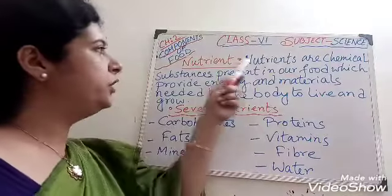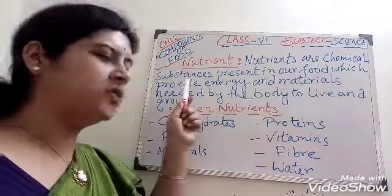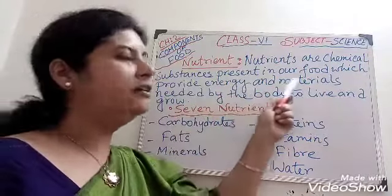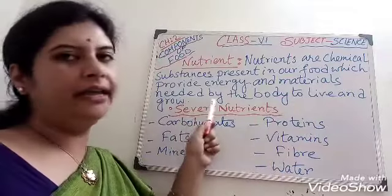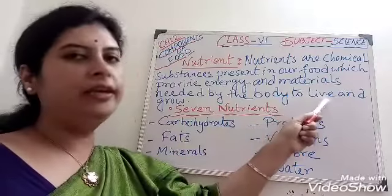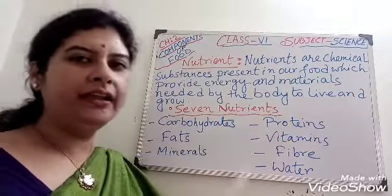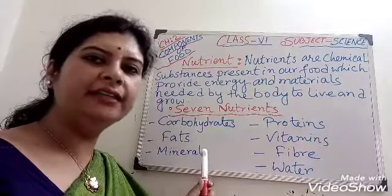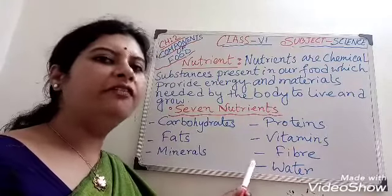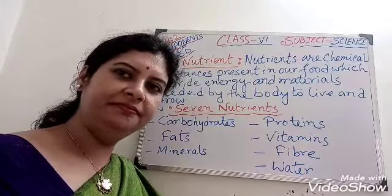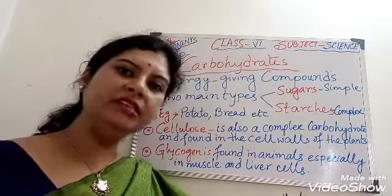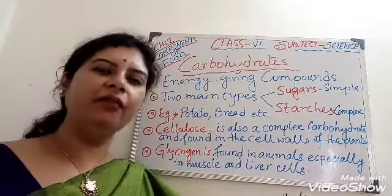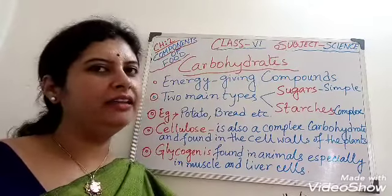Nutrients are chemical substances present in our food which provide energy and materials needed by the body to live and grow. There are seven nutrients: carbohydrates, fats, minerals, proteins, vitamins, fibers, and water. Each of these components is important for our body to function properly. Let us learn about each one in detail.